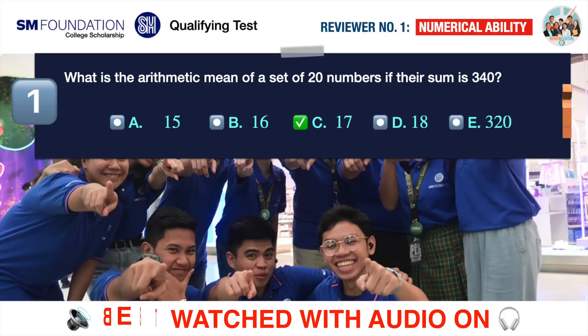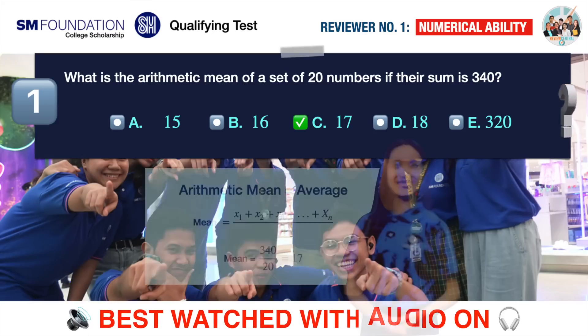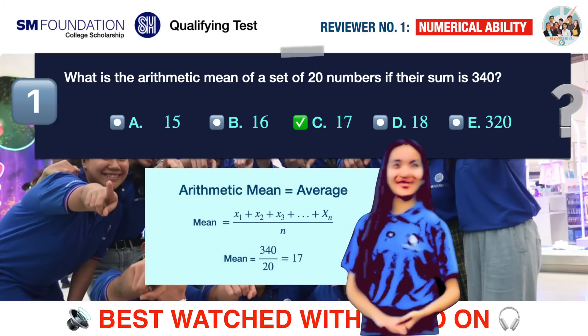The correct answer is C. 17. The arithmetic mean of a set of numbers is simply the average of the given numbers. In this case we don't know the specific numbers but we were given their sum and the number of elements in the set. So to get the arithmetic mean or average we simply divide the sum by the number of elements in the set. 340 divided by 20 equals 17. Therefore, the arithmetic mean is 17.